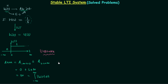u(t) is a power signal, not an energy signal, because it is an infinite extension signal in which the amplitude is not decreasing. For infinite extension signals, the amplitude should decrease for the signal to be an energy signal. Here the amplitude is constant from zero to infinity, so it is a power signal, not an energy signal, and hence not absolutely integrable. Therefore the system is unstable.